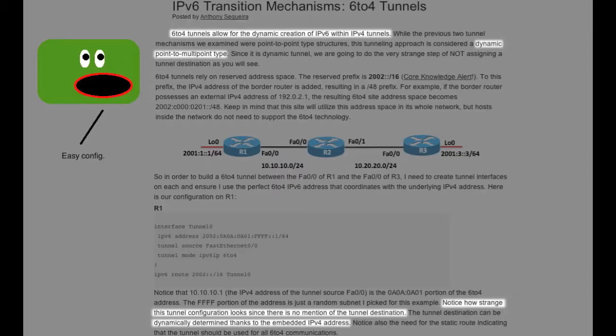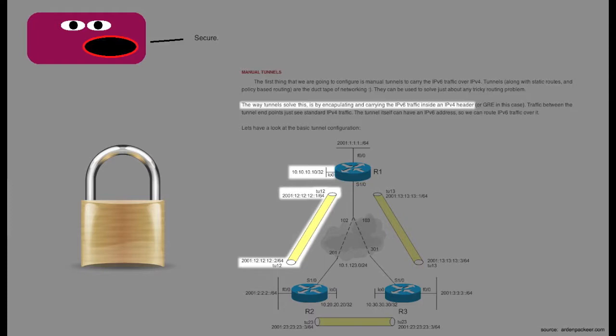Dynamic tunnels simplify maintenance because they are configured automatically depending on packet destination addresses and routing. Static or manual tunnels, on the other hand, have traffic information available at each endpoint of the tunnel, which gives you extra security against injected traffic.